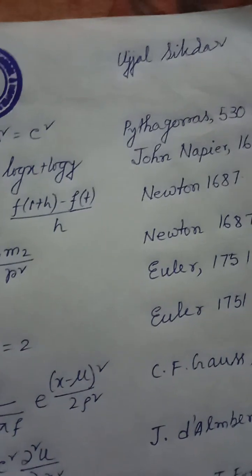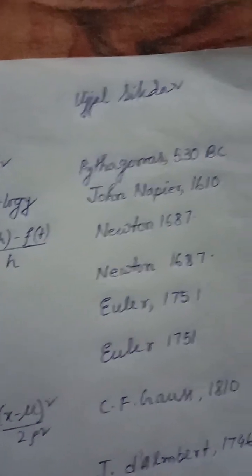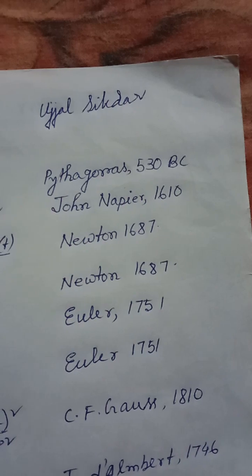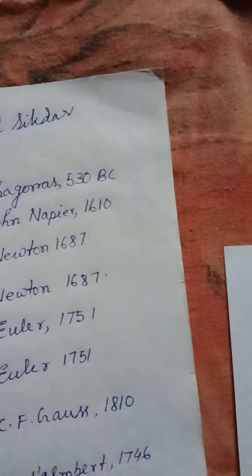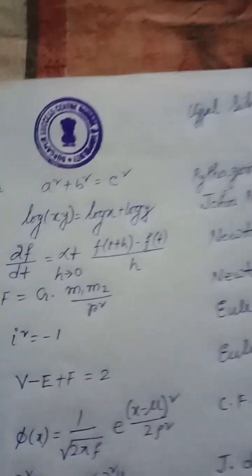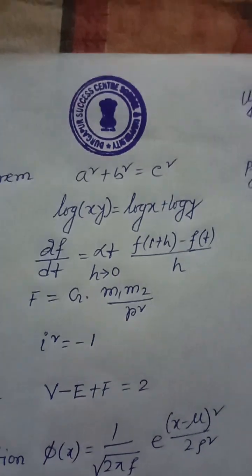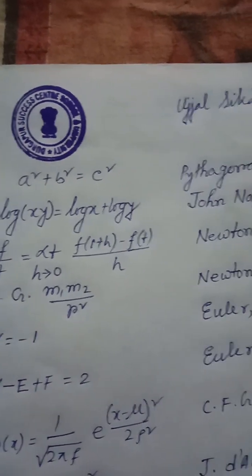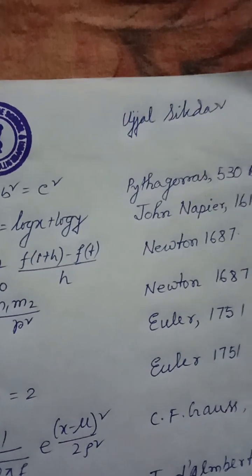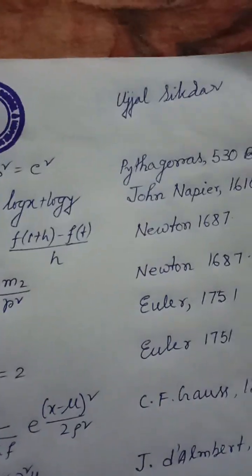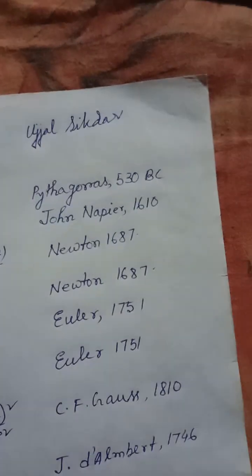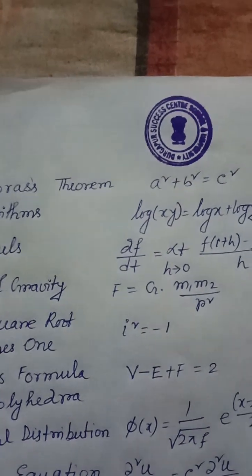Equation 4: Calculus — df/dt = limit h→0 [f(t+h) − f(t)] / h, Newton, 1687. Also Newton's law of gravity: F = G·m₁·m₂ / r², Newton, 1687. Equation 5: Imaginary numbers — i² = −1, Euler, 1751.